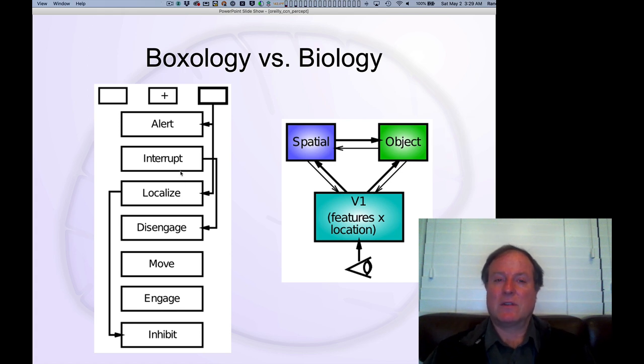The metaphor at this time was very much that the brain is like a computer program. And so you would think about oh these are the different information processing steps we would need. And if you have a particular difficulty in responding in an invalidly cued case, Posner reasoned this must be a result of a deficit in the disengage box.